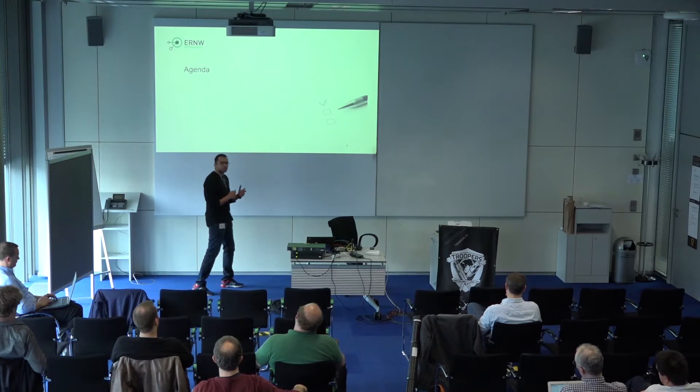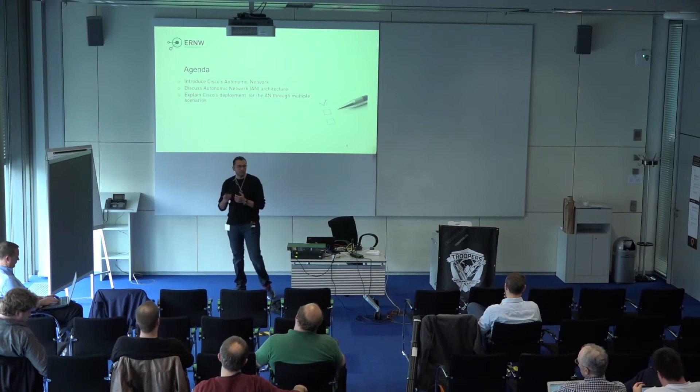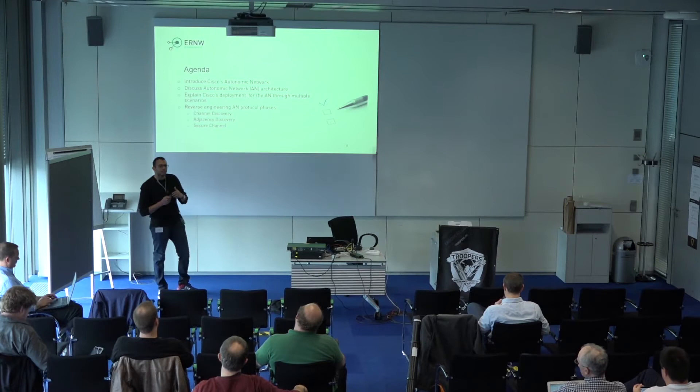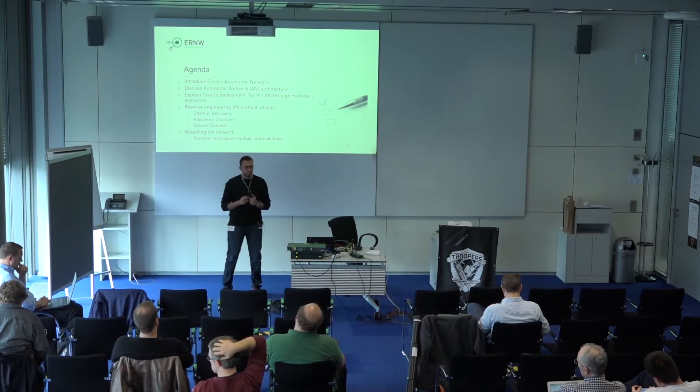Today's agenda is mainly divided into three parts. The first part will be about Autonomic Architecture — a theoretical understanding of how Cisco implemented Autonomic Network. In the second part, we will dive into the practical implementation and speak about the three phases of the Autonomic Protocol. And in the end, we will use that knowledge to find vulnerabilities and exploit them.